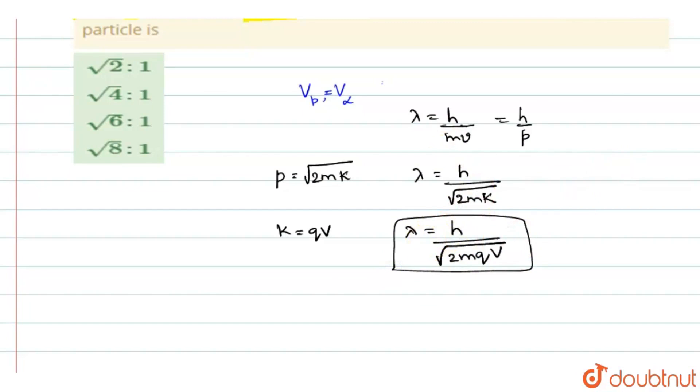Now we will apply this equation for both. First for alpha particle and second for proton. When you are writing it for proton, lambda p will be equal to h by root 2mp qp V.